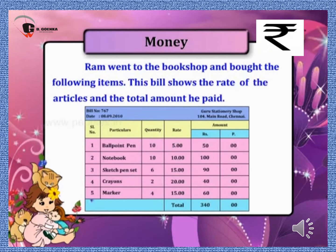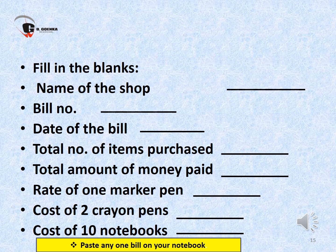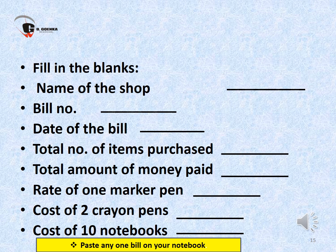Look at this bill very carefully and fill in the blanks. First: name of the shop. Second: bill number. Third: date of the bill. Fourth: total number of items purchased. Fifth: total amount of money paid. Sixth: rate of one marker pen. Seventh: cost of two crayon pens. And last: cost of ten notebooks. Let's see how many of your answers are correct.